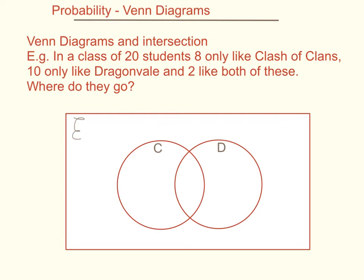In probability, we use Venn diagrams to help us when there's overlap between two different events. Here's an example: in a class of 20 students, 8 only like Clash of Clans, 10 only like Dragonvale, and 2 like both. This diagram helps us put those people in the right place to work out probabilities later on.